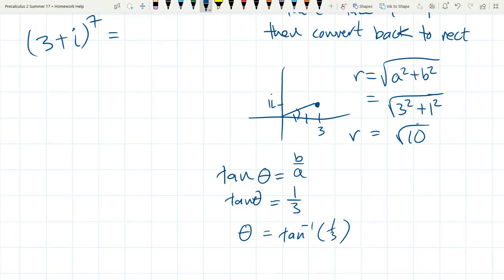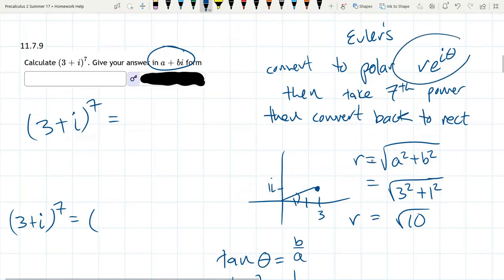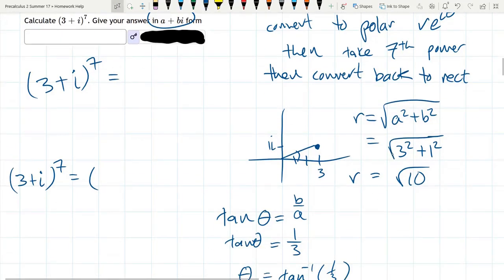So we have 3 plus i to the 7th is, in Euler's form, r e to the i theta. And I'll scroll up so you can see that. It's r e to the i theta. And we have r, we have theta. We're just going to put in that form. Square root 10 e to the i tan inverse 1 third. Raised to the 7th power.